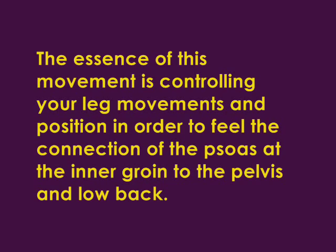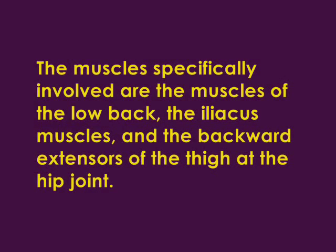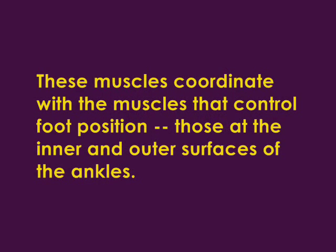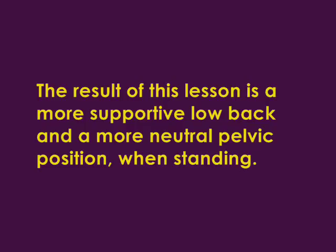The essence of this movement is controlling your leg movements and position in order to feel the connection of the psoas at the inner groin to the pelvis and low back. The muscles specifically involved are the muscles of the low back, the iliacus muscles, and the backward extensors of the thigh at the hip joint. These muscles coordinate with the muscles that control foot position — those at the inner and outer surfaces of the ankles. The result of this lesson is a more supportive low back and a more neutral pelvic position when standing.